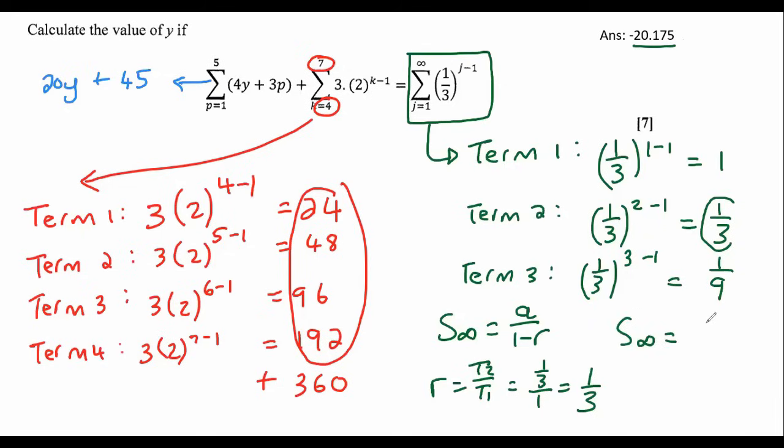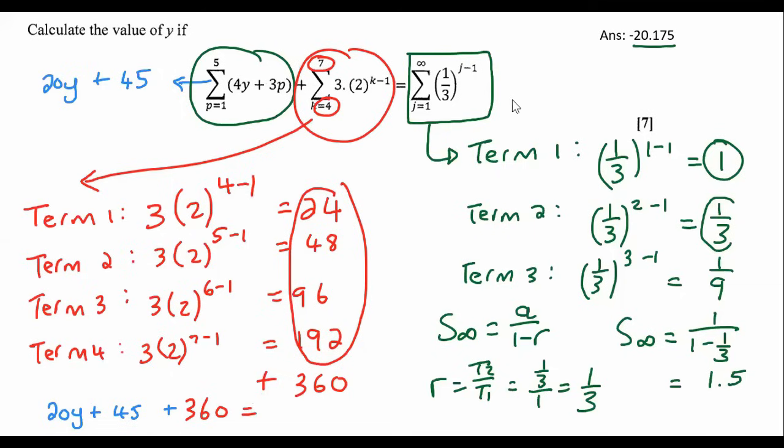Now we can get the sum to infinity. That's going to be A over one minus R. So A is term one, one minus a third. This should be three over two. One over one minus a third, three over two. I'm just going to say 1.5. And so now we're literally just going to plug everything in. So the first part here is 20y plus 45. So we're going to go 20y plus 45 plus. Then the red part, this part here was 360. And then that's equal to the part that was in green, and that was 1.5. And there we go. Now it's just a matter of solving. If you eventually do go and solve this, you should end up with a final answer where y is equal to negative 20.175.